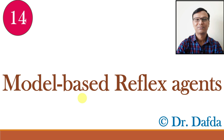In the previous video class, we discussed simple reflex agents which make decisions only based on the current percept — what they can observe right at that moment. However, Model Based Reflex Agents are a bit more advanced. They use something called an internal state to keep track of information they can't see directly at any given moment. This internal state allows the agent to make better decisions in partially observable environments — think of it like a memory of recent events that helps guide its choices.